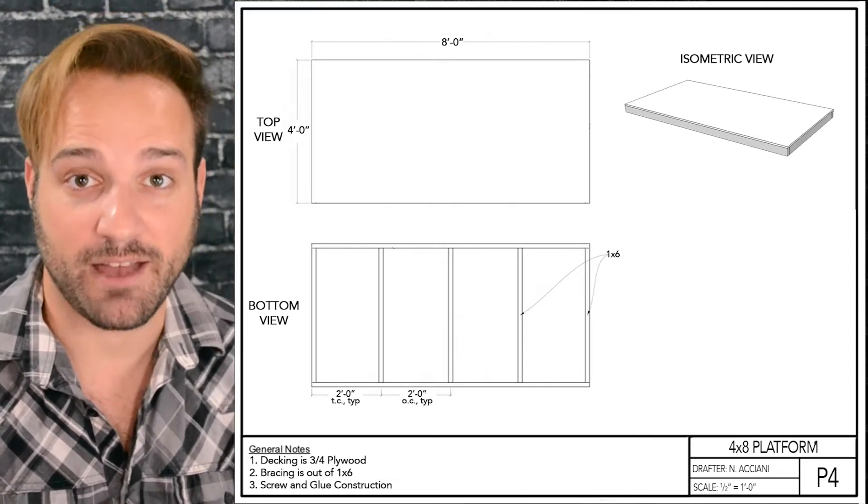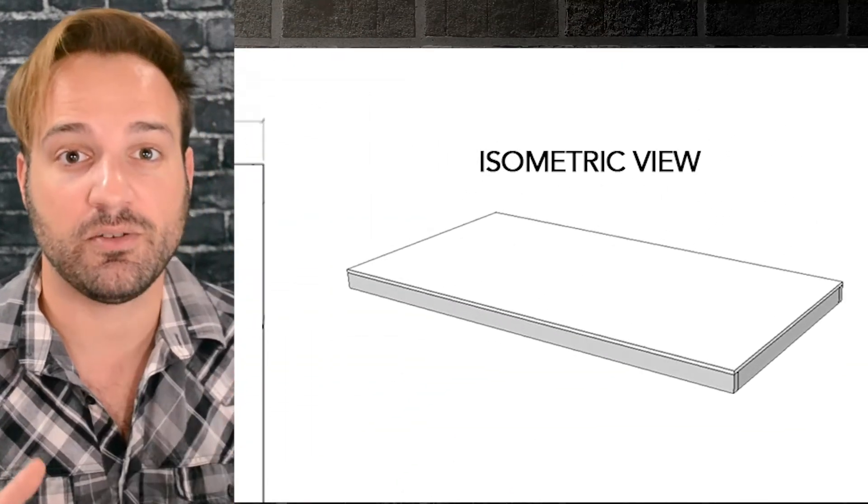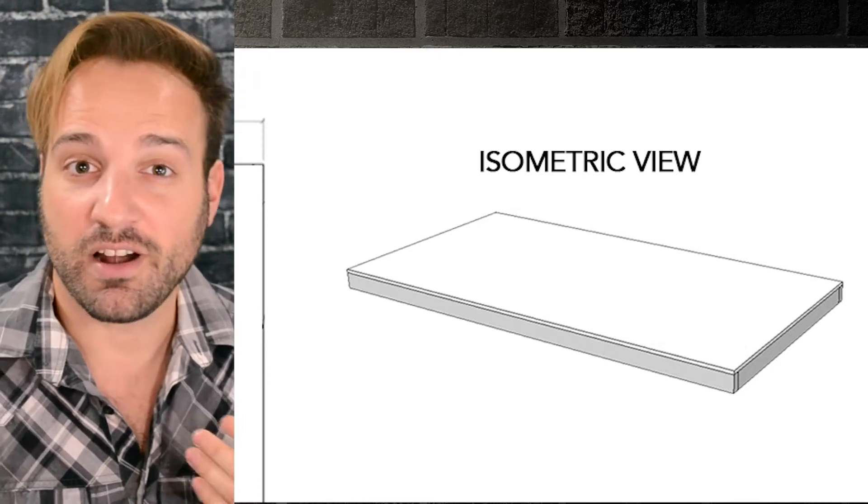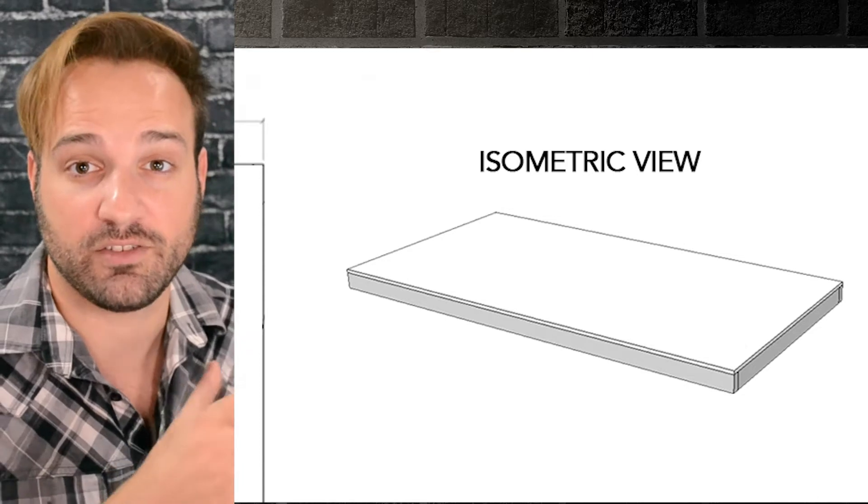Let's take a look at the different views that we have here. Your isometric view, your top view, and your bottom view. The isometric view, that is your 3D view. It's basically showing you what it's going to look like when it is finished. There usually aren't any measurements here. This is your reference point. That is what you are trying to build and accomplish.